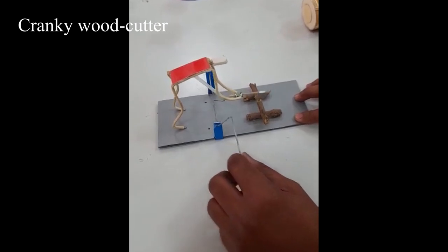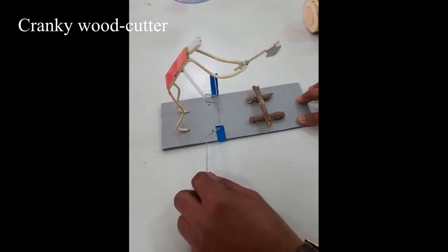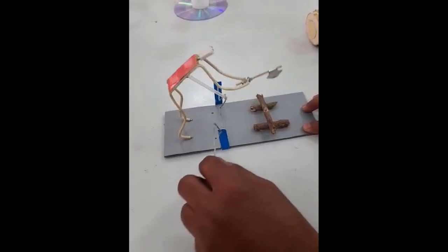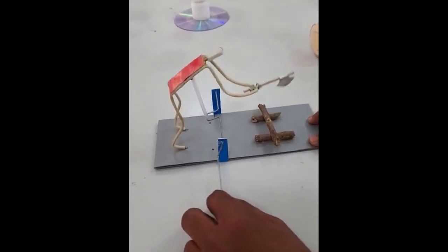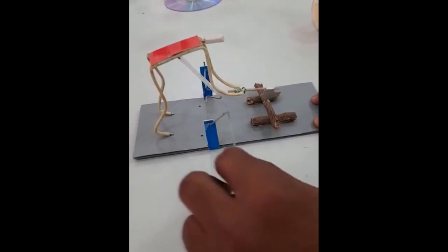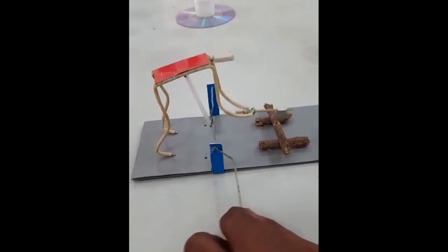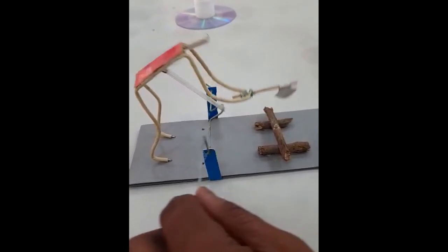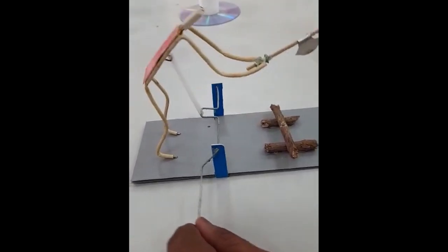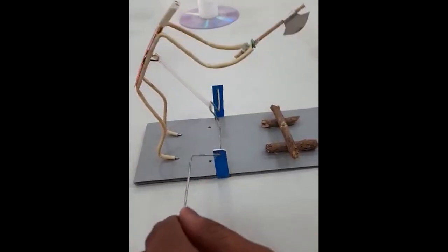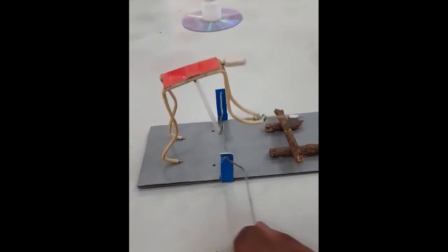Now, here is a man made up of wire. And this wire man is cutting the wood. How? The wire man is connected to the crank. While moving the crank, there is a movement of up and down. So that's why it looks like a wire man cutting wood.